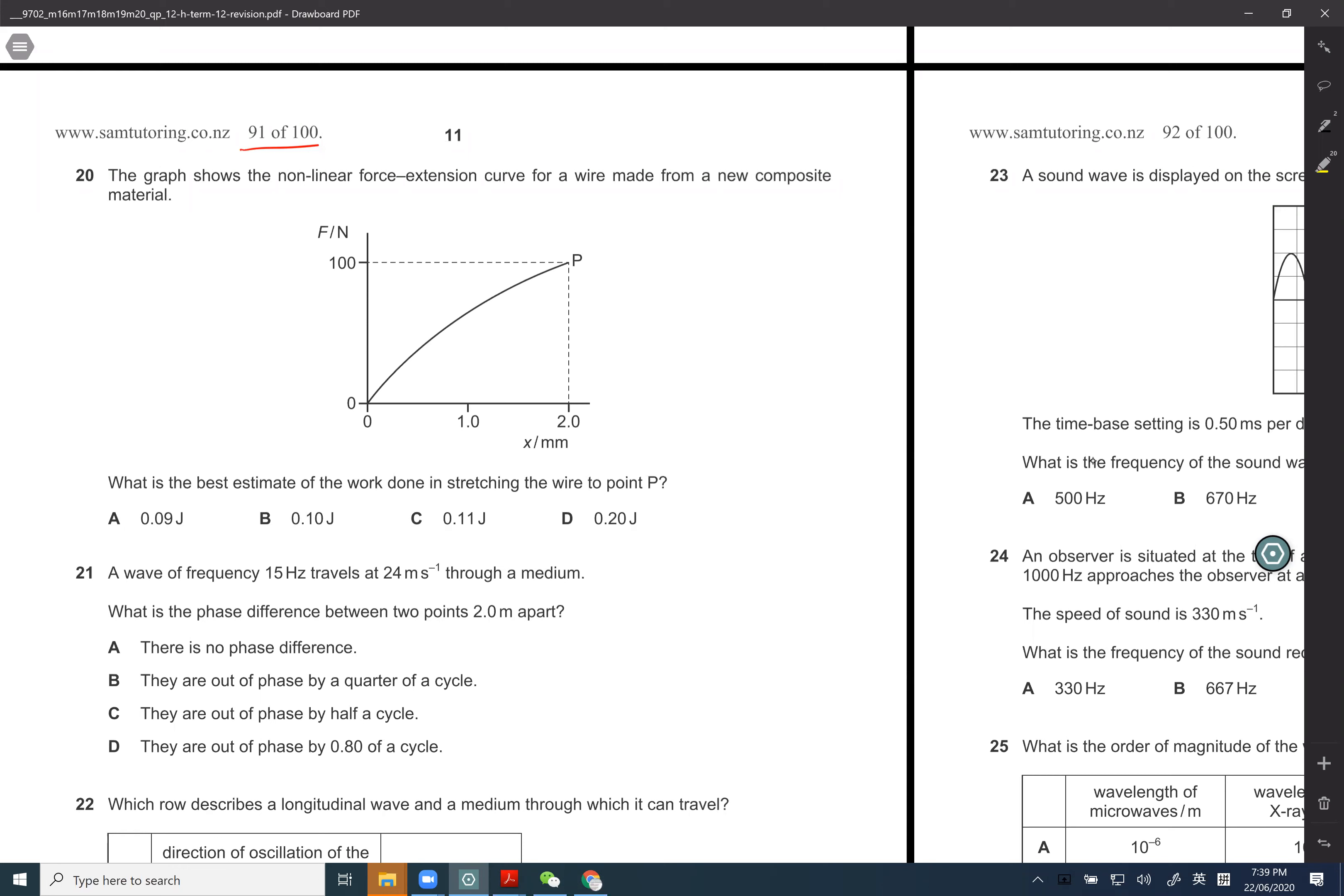In a force and extension graph, area under is the work or energy. The area is half base times height. Base is 2, but the 2 is in millimeters. Height is 100. So we got 0.1. But guys, it's bigger than 0.1, right? So C. We choose C, bigger than 0.1.